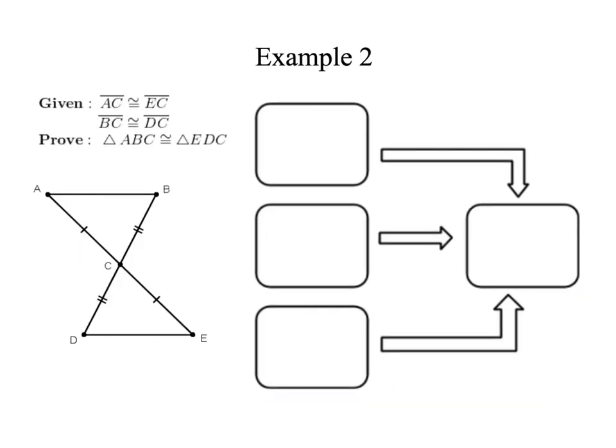In this next example, I've got a couple of givens: AC congruent to EC, BC to DC. And we want to prove the two triangles are congruent. Our givens are already in our picture, so we don't have to do that. So our next step is to try and find anything else in the picture that's congruent. We have vertical angles here. So I'm going to put a little half circle on my vertical angles. That's all I can see in the picture that would be congruent.